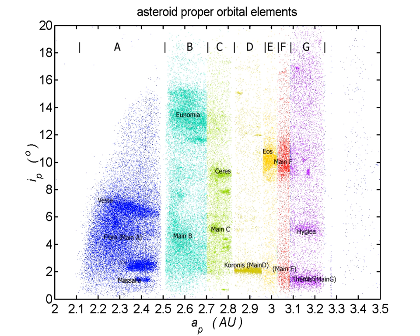Eunomia family: 5,670 known members, named after 15 Eunomia, is a family of S-type asteroids. It is the most prominent family in the intermediate asteroid belt and the sixth largest family with approximately 1.4% of all main belt asteroids.